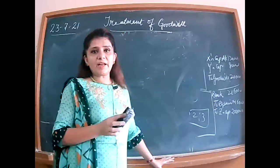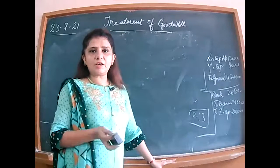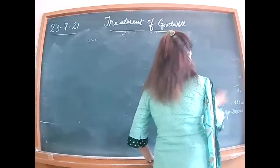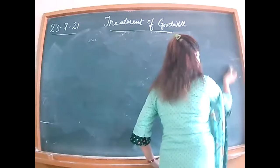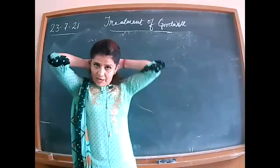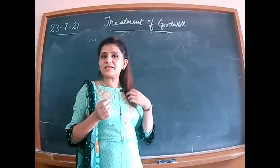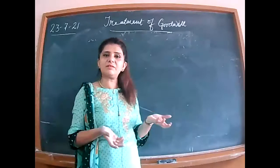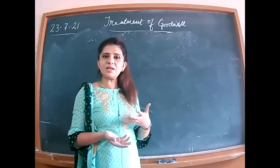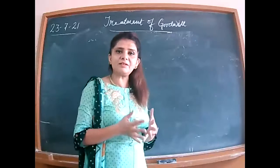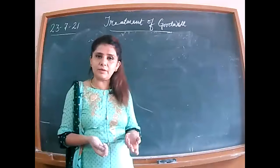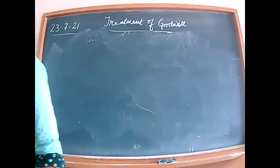Any doubts may be raised. In illustration 29, C is not bringing a single penny for his share of goodwill, but the sacrificing partners agree. The amount is extracted from C's current account by debiting it and crediting the sacrificing partners' capital accounts. Premium for Goodwill account is never opened here since nothing comes in cash.